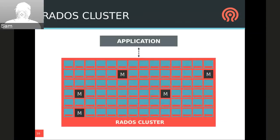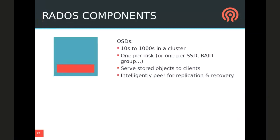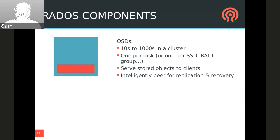Fundamentally, RADOS is a cluster of individual processes running on servers in your data center. Most of these processes provide access to the data stored on disks. A few provide cluster management services which allow the other cluster components to intelligently handle changes in the cluster like node addition and failure. The first component is the OSD — we typically have tens to thousands in a cluster. We recommend you have one OSD per disk, per SSD, or per RAID group. These OSDs serve data directly to clients. Clients and cluster members all have access to the same placement information and can work out which OSD is storing an object independently. Each OSD is also responsible for handling replication and recovery of objects stored on it without need for another coordinator.